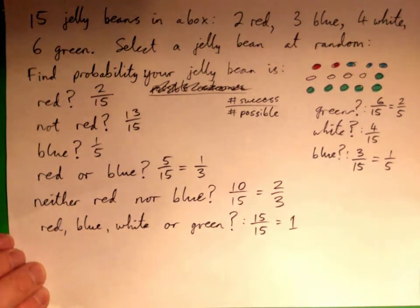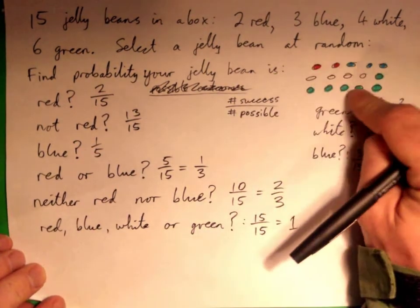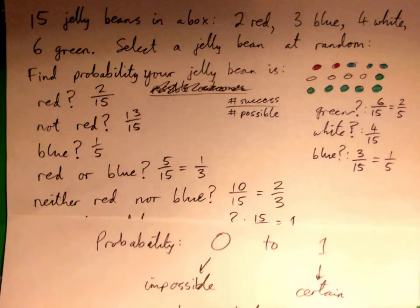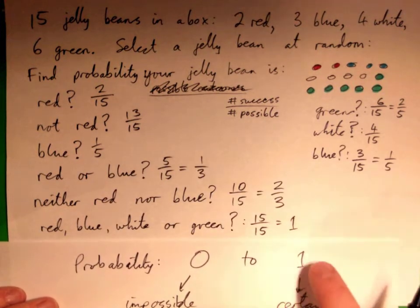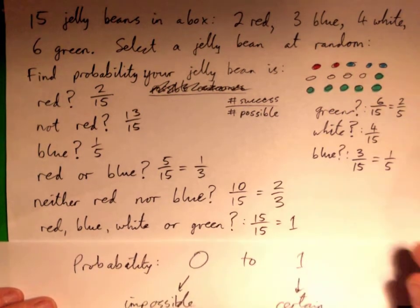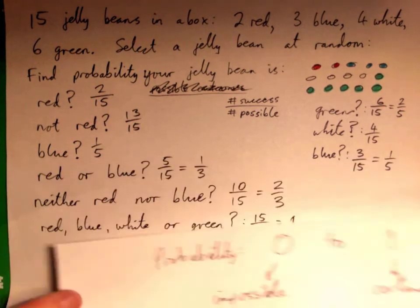That's a certain outcome. If you pick a jelly bean from this, it's absolutely certain that it's going to be red, blue, white, or green. And so that's our certainty, right? That's the probability. It goes from zero to one. One is the highest you can get. When you're talking about probability, that means certain.